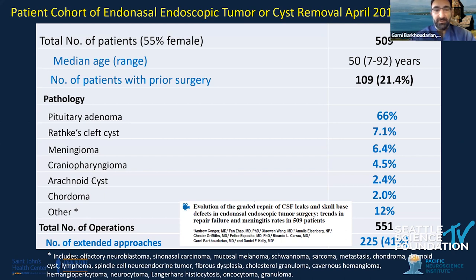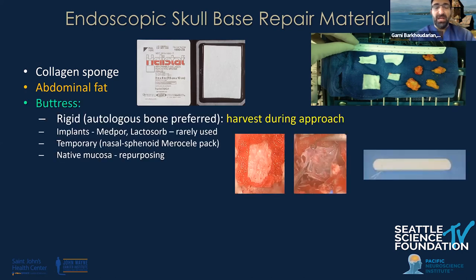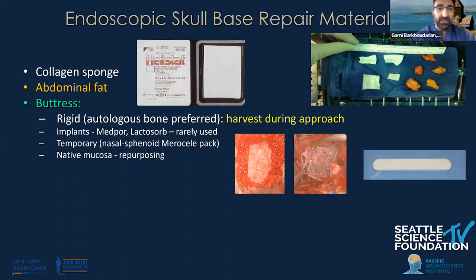In our published series, with New Conger as lead author, we had 509 patients with a variety of pathologies resected. Almost every patient will have a collagen sponge placed — we use Helostat, which works very well in nasal reconstruction at one-quarter the cost of DuraGen. Abdominal fat is frequently used as mentioned. We will often use some sort of buttress, whether a rigid buttress like bone, an artificial rigid buttress like Medpor graft or the TSI implant, or removable rigid buttresses like Merocel packing, which has been very helpful in our reconstruction techniques and really expands our ability with flap placements.